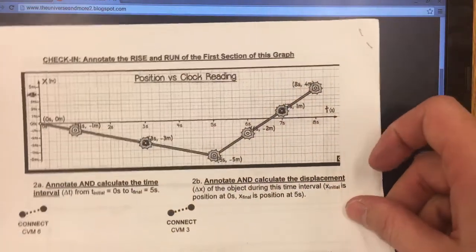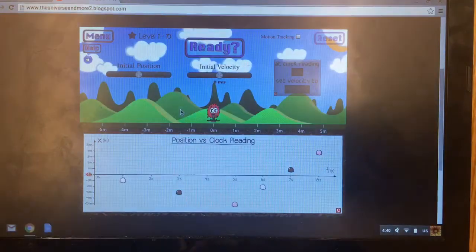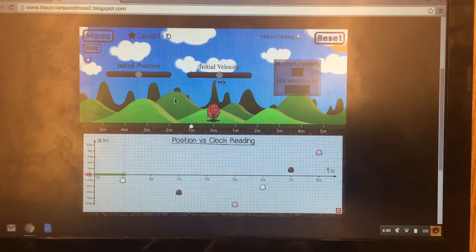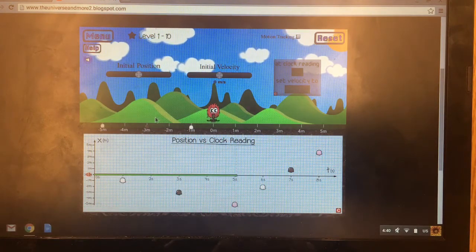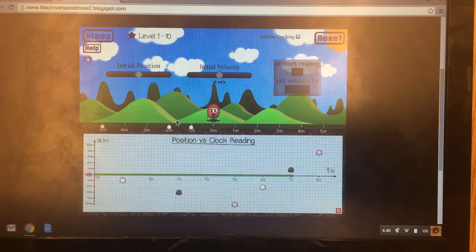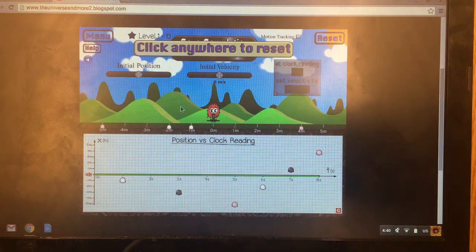This level is a little bit different because you're trying to get this guy to catch some ice cream cones. Notice if we hit ready and go, all these ice cream cones are going to fall and he is not in the right place to catch them. So we need to move him so that he can catch all of those ice cream cones. It's basically the same idea though.